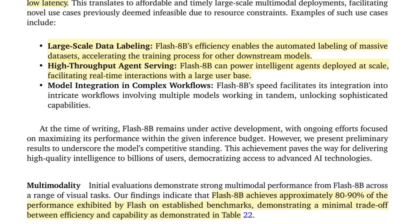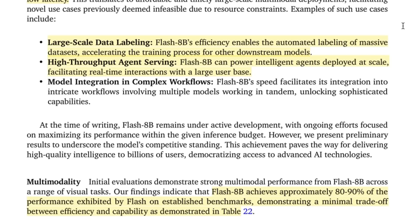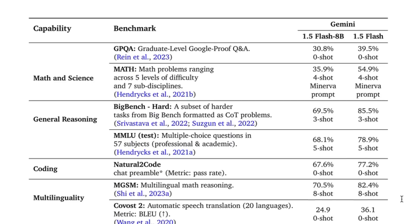Another interesting use case is its multimodality — things like getting it to check an image to see if something is in it, whether there's text in an image, what that text is. This model can do those tasks at very high speed. In the paper, they have a whole bunch of benchmarks, and clearly the Flash 8B doesn't perform as well as Flash — it's quite a bit behind on reasoning and things like MMLU. The goal is really just to have a very quick model as opposed to a very intelligent one.